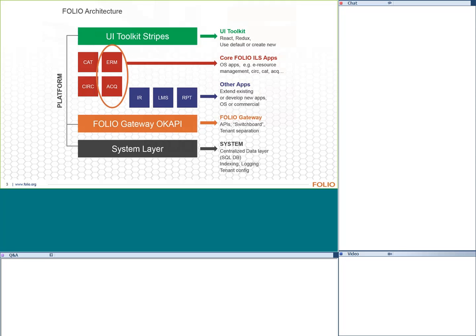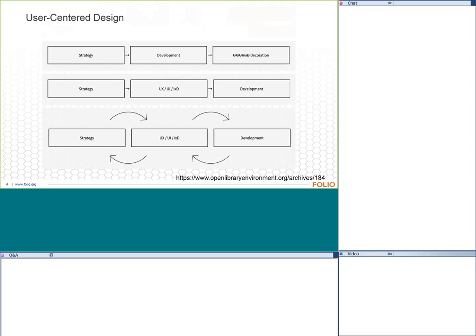We specifically focus on electronic resources management and acquisitions functionality. On general FOLIO development: in previous projects the user experience and interface has been absolutely the last thing looked at. Here we've been doing a more iterative approach where the user interface is considered almost first, informing how we develop and what strategies we want. When we show you the prototype, it will be a very visual experience — there isn't a database underneath it, but we're showing you what we want it to look like.